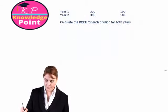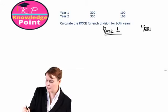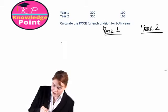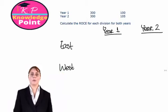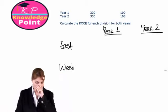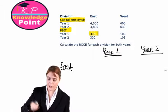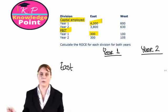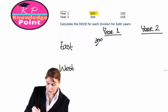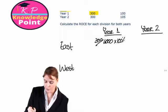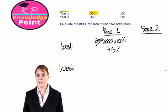So we'll set up a little table. We've got year one and year two and we've got our divisions, East and West. So our return on capital employed will be profit before interest and tax divided by capital employed. Looking at East division for year one, their profit before interest and tax is 300, and their capital employed is 4,000. So the return on capital employed, 300 divided by 4,000 multiplied by 100%, you should come up with 7.5%. Very straightforward.